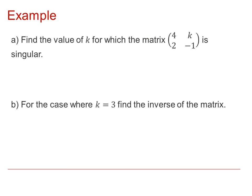Here's an example then where we're asked to find the value of K if the matrix is singular. We know then that the determinant of M, which is here 4 multiplied by -1, minus 2K, must be equal to 0. So, there we've got, therefore, 2K is equal to -4, and therefore, K is equal to -2.